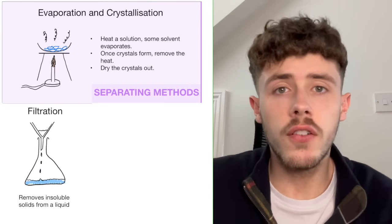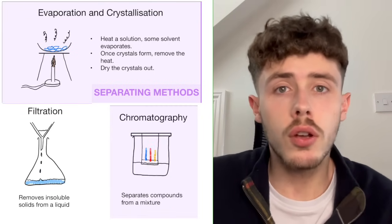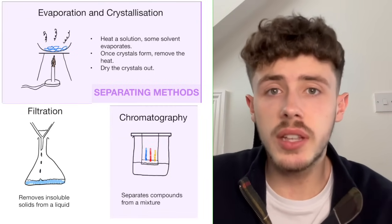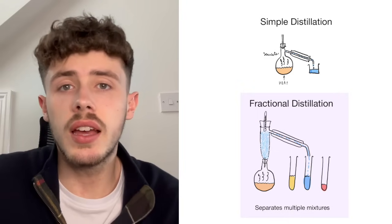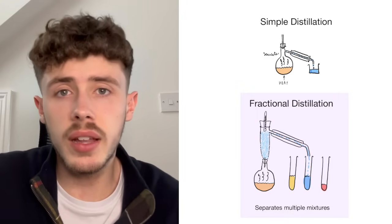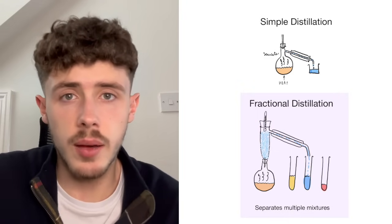If you want to separate compounds or mixtures into their original elements, there are four main ways to do this: crystallisation, filtration, chromatography, and distillation. Distillation can either be simple distillation or fractional distillation. Fractional distillation is slightly more complicated and does involve a few extra steps.